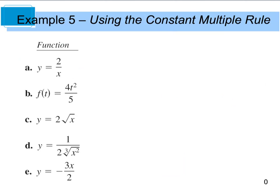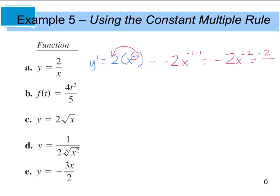So let's look at example 5. For part A, I'm going to write this as 2 times x to the negative first. When I take the derivative, I take this exponent and multiply it by the coefficient in front, which gives us negative 2x to the negative first minus 1, which is negative 2x to the negative second — or really negative 2 divided by x squared. For part B, we have 4 fifths times t squared. Taking the derivative — f prime of t — we take this 2 and multiply it by the front: 4 times 2 is 8 fifths, t to the 2 minus 1, which gives us 8 fifths t.